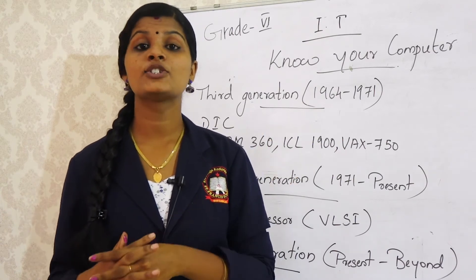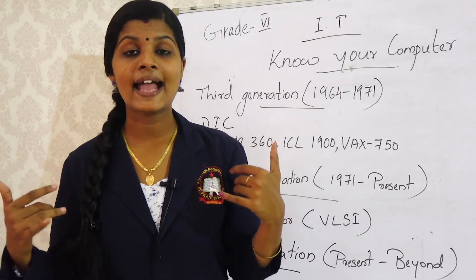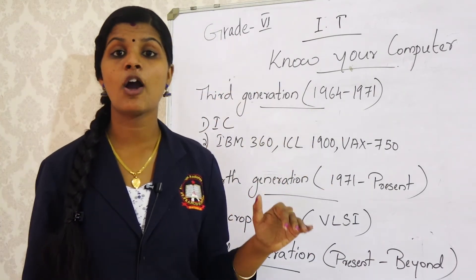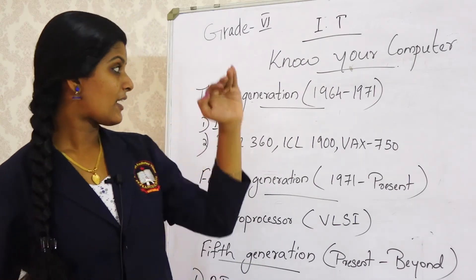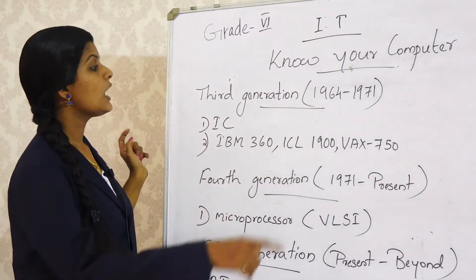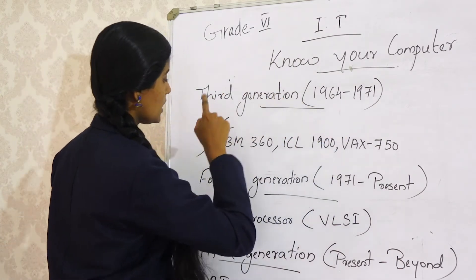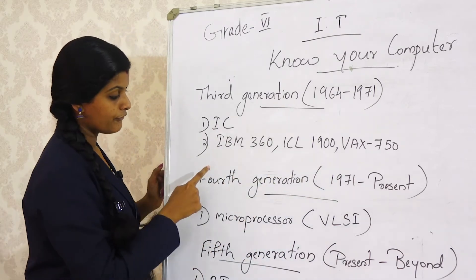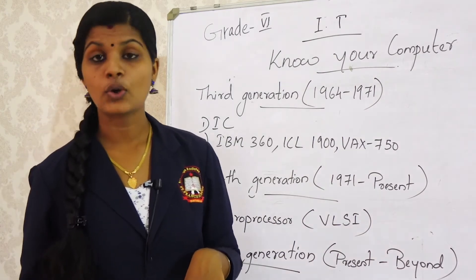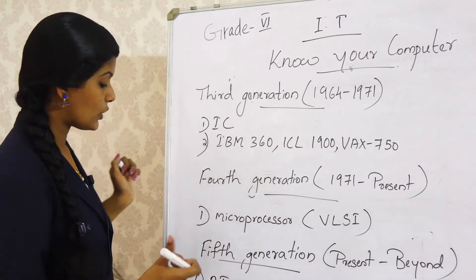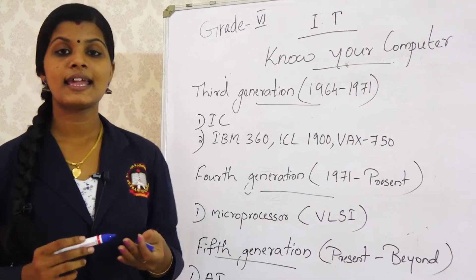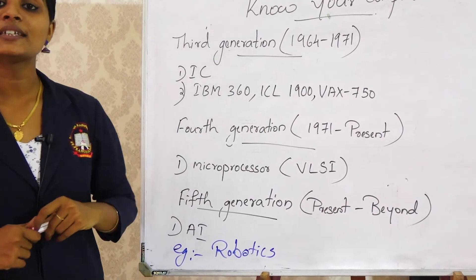Artificial intelligence will think and act like human beings and will be very helpful for us. These are the five generations of computers. Children, in your notebook write the headings for third, fourth, and fifth generation — with year, main component, and examples. For fifth generation you can write AI as the component and robotics as the example.